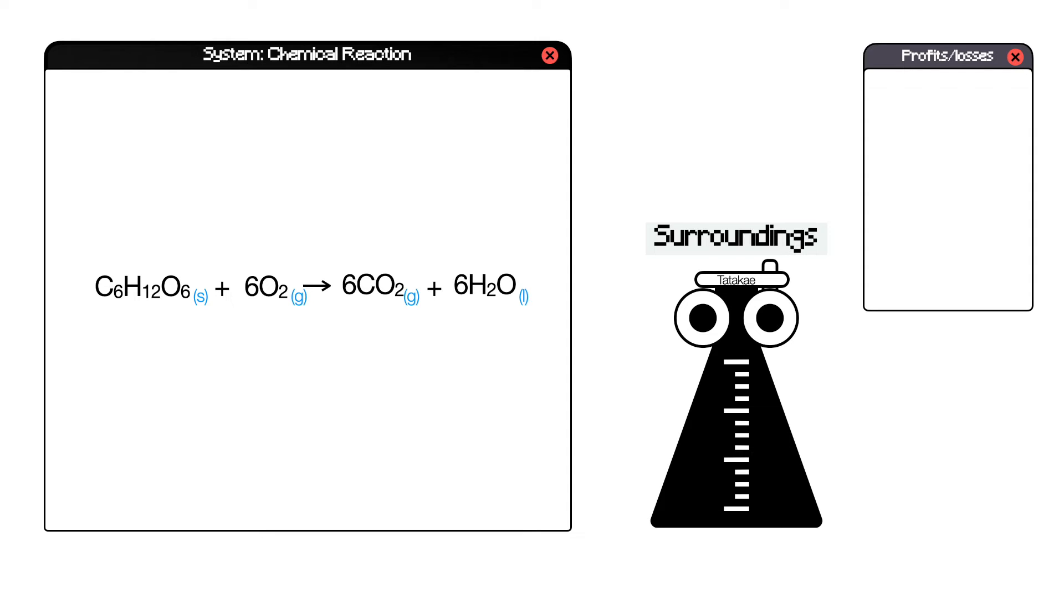And it hinges on the first law: energy cannot be created nor destroyed. And what that actually also implies is that no matter the route you take, if you began as glucose and oxygen and end up as carbon dioxide and water, you will always end up with the same energy profit loss.